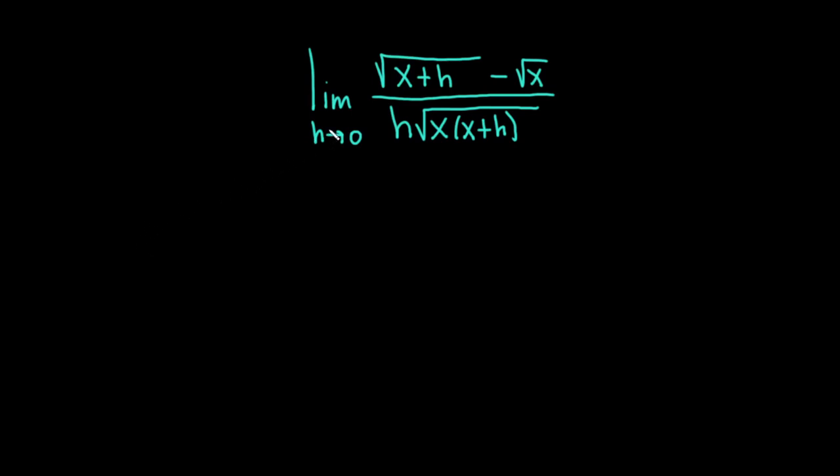Hello, in this video we're going to find the limit as h approaches 0 of the square root of x plus h minus the square root of x, all divided by h times the square root of x times x plus h. Let's go ahead and carefully work through it. Solution.